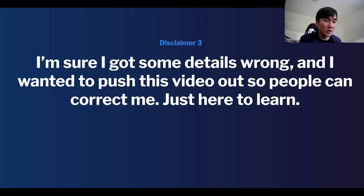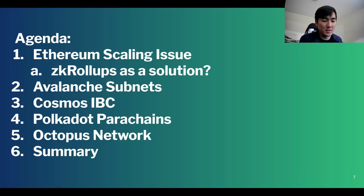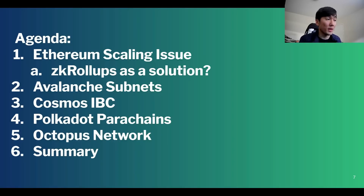I'm hoping to spark discussions around the trade-offs between Avalanche, Cosmos, Polkadot, and others, and think about where this space is going in the next couple of years. The agenda: I'll first go over the Ethereum scaling issues and why all this discussion is happening in the first place, then go over subnets, IBC, Polkadot, Octopus Network, and wrap it up with a summary.